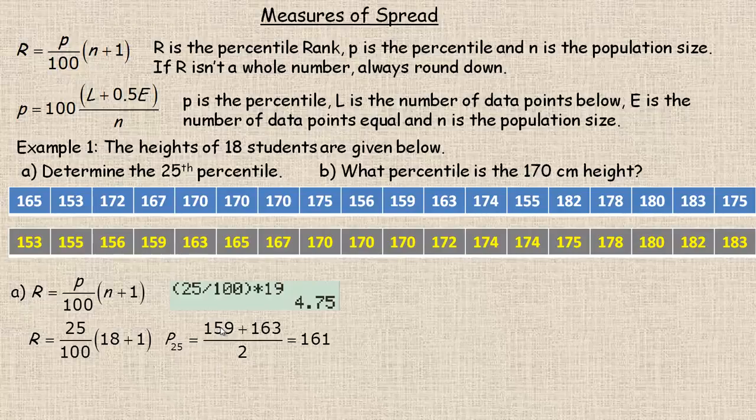We average the two: add them up and divide by 2, giving us 161. So the 25th percentile is 161.